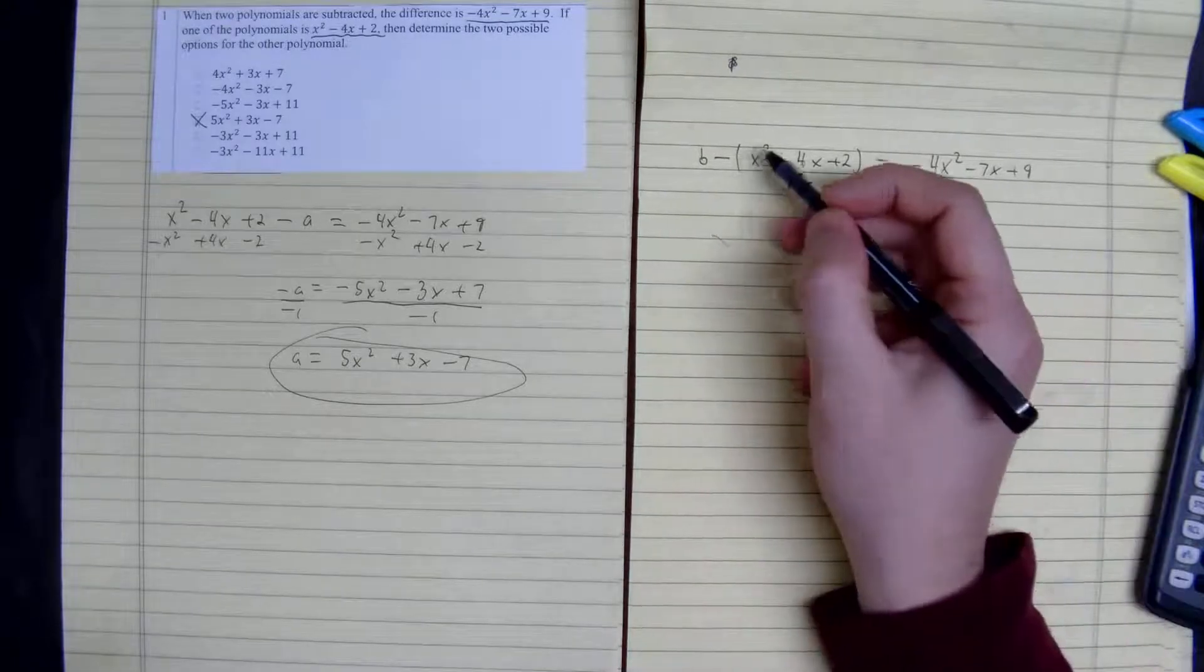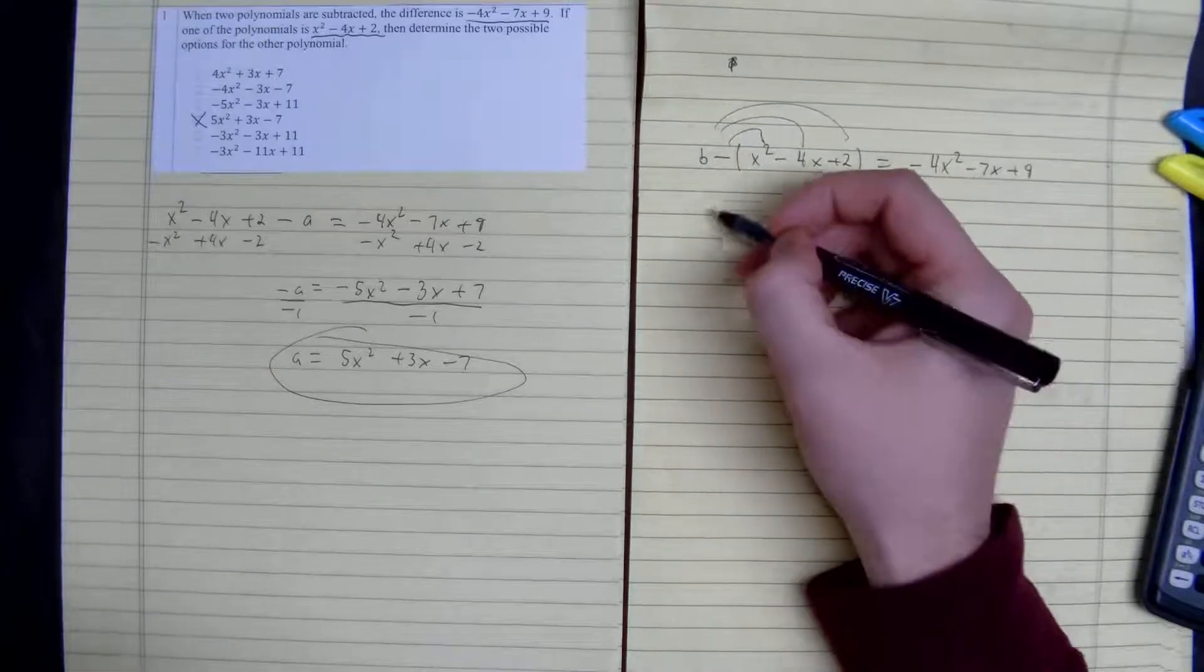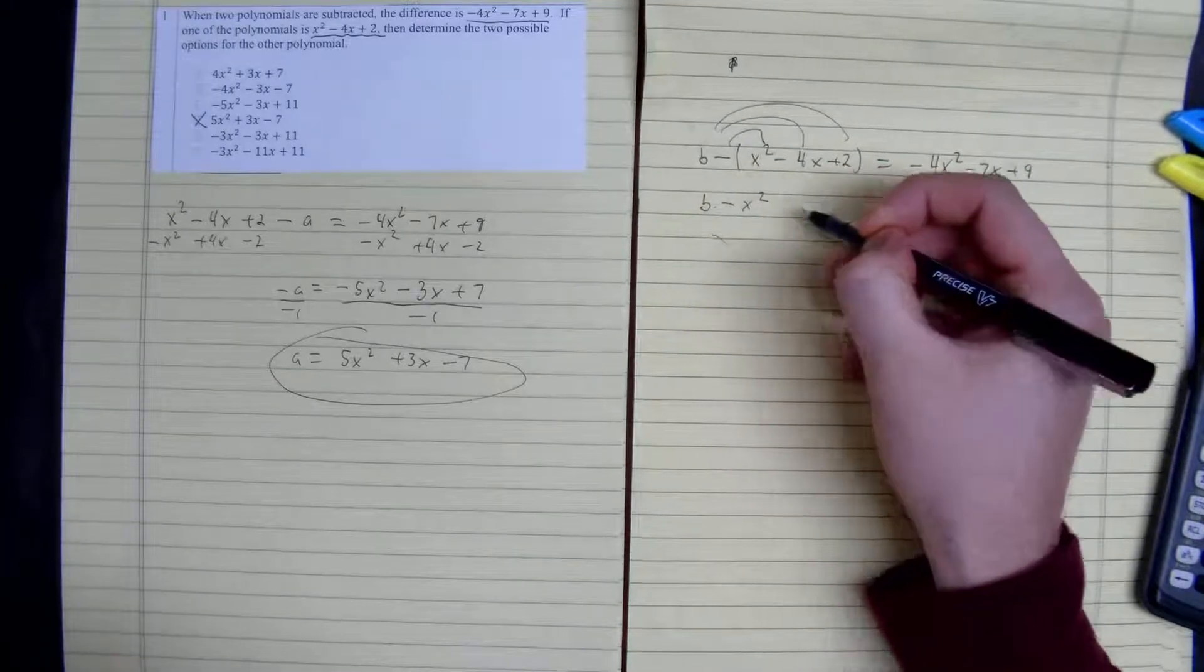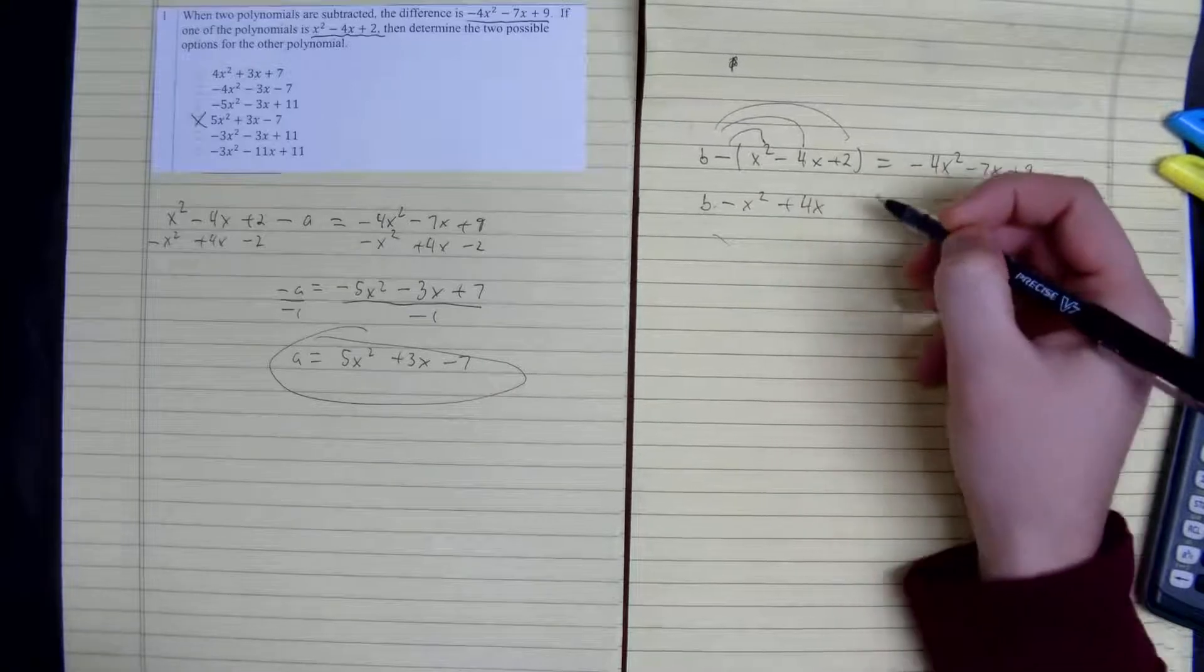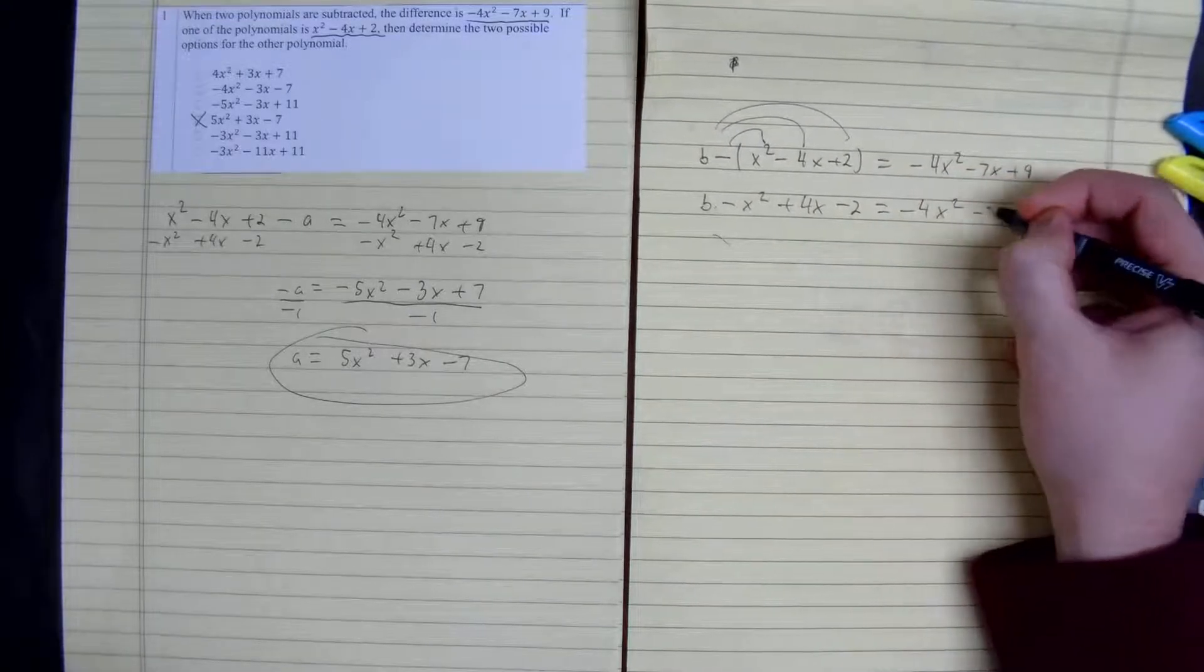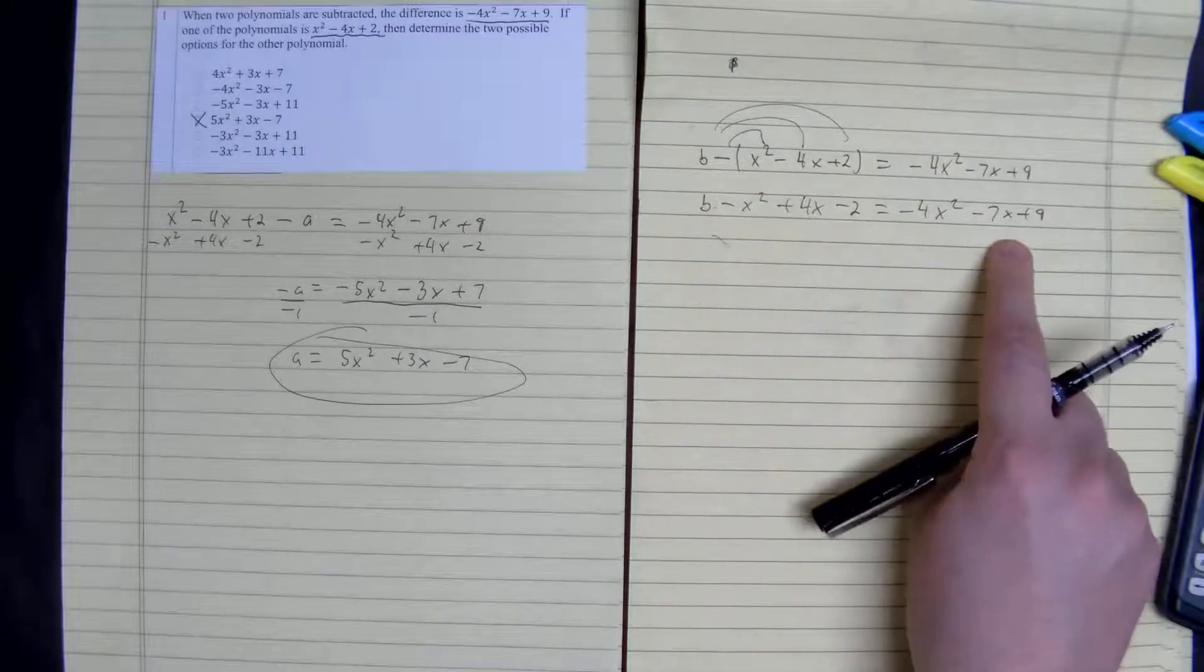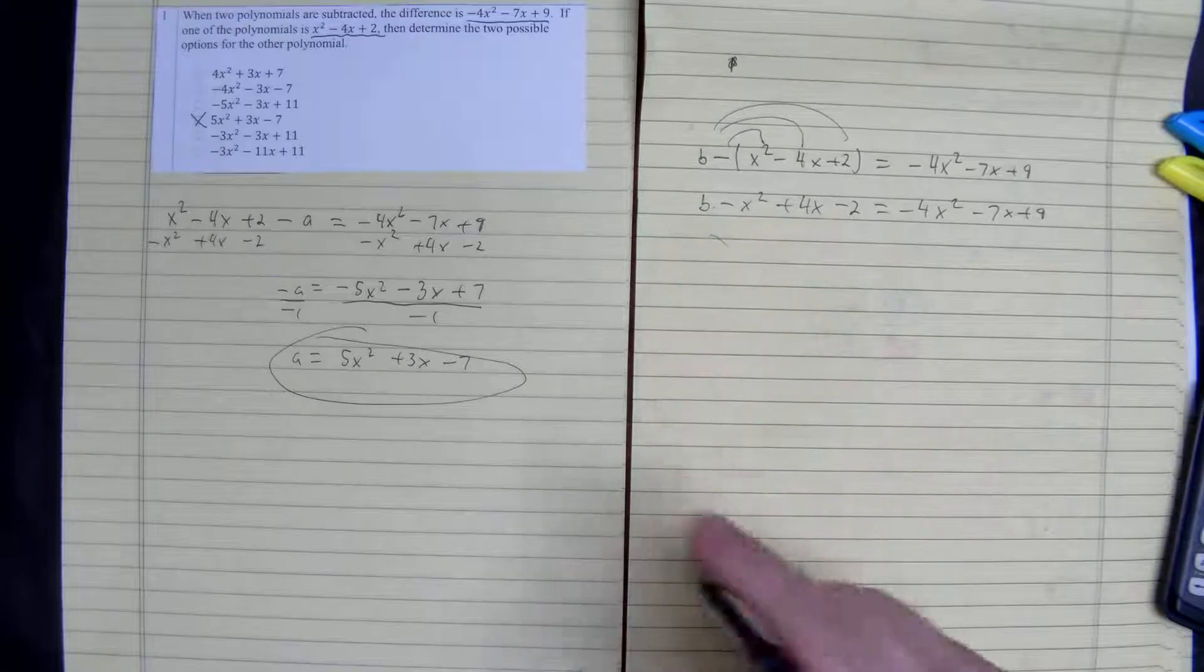So to do that, we first need to distribute the negative to all terms. So we get B minus x squared plus 4x minus 2 equals negative 4x squared minus 7x plus 9. Now we just need to combine these equations, and then we figure out what equation B is going to be.